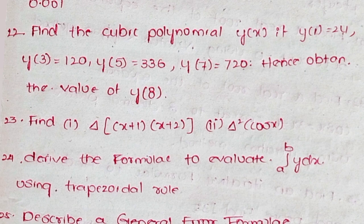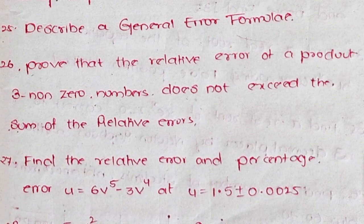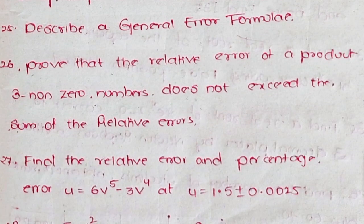Question 23: Find Δ(x+1)(x+2). Secondly, Δ²cos(x). Question 24: Derive the formula to evaluate ∫ₐᵇ y dx using trapezoidal rule. Question 25: Describe a general error formula. Question 26: Prove that the relative error of a product of three non-zero numbers does not exceed the sum of the relative errors. Question 27: Find the relative error and percentage error u = 6v⁵ - 3v⁴ at v = 1.5 ± 0.0025.